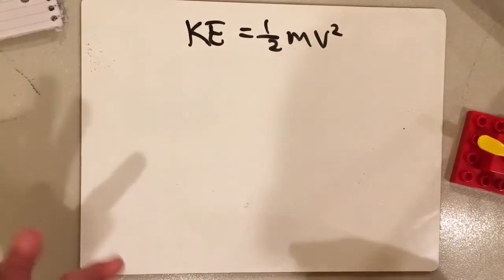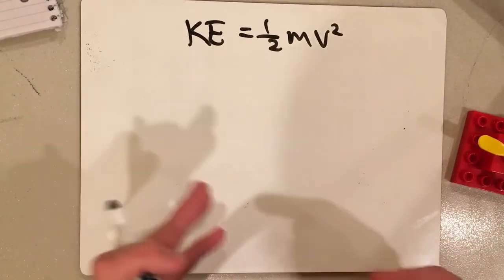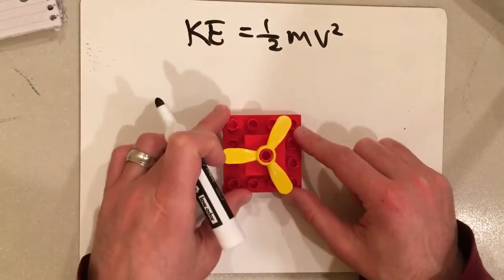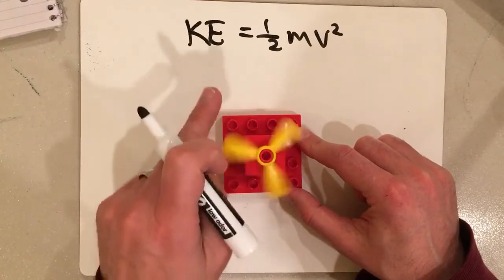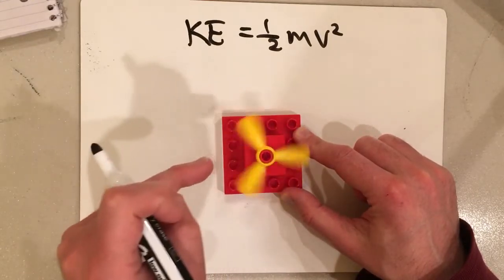But what about if the particle is spinning? Instead of its position changing, it's just spinning. For example, what if we have this toy here which has a propeller, what if the propeller is spinning? Now, clearly, the propeller has motion, it's spinning, there is clearly kinetic energy.